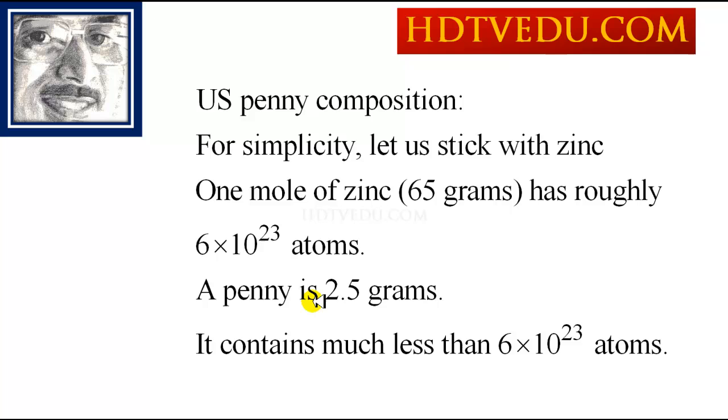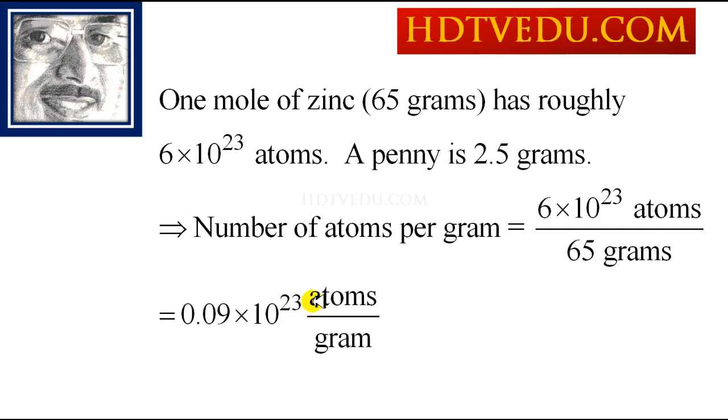So one mole of zinc, 65 grams, has roughly 6×10^23 atoms. A penny is 2.5 grams. So 65 grams contains 6×10^23 atoms. That means 2.5 grams should contain much less. So what is the number of atoms per gram? 6×10^23 divided by 65, and if you multiply that number by 2.5...